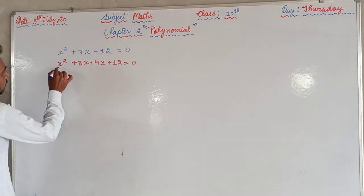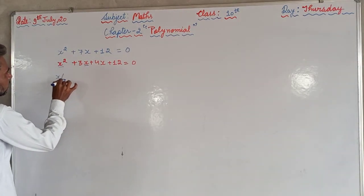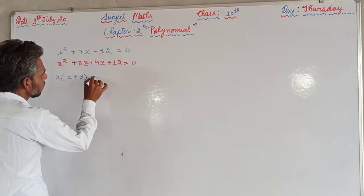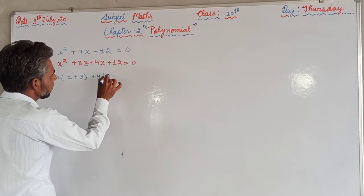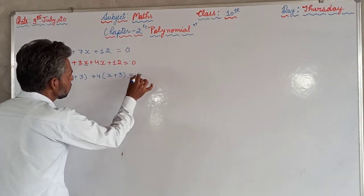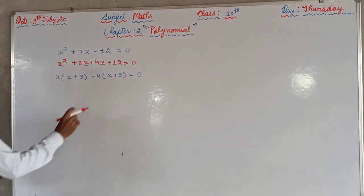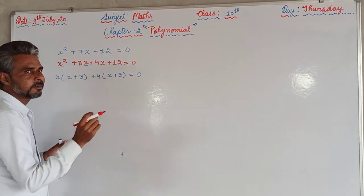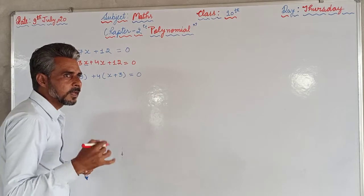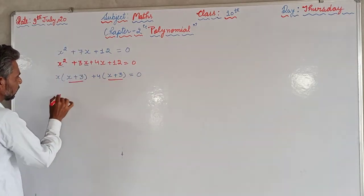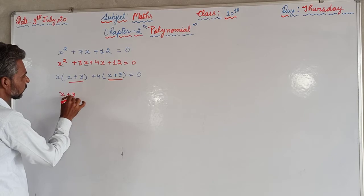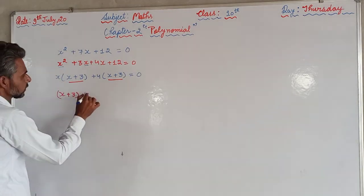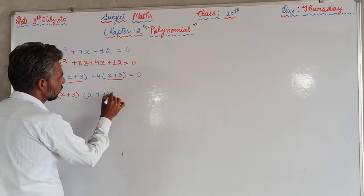So now what we will do, we will take the common. From here x is common, so we have taken x common, remaining is x + 3. From here +4 common, remaining is x + 3 equals to zero. So here we will get the same within the brackets. So now this is common. x + 3 take common, and what is remaining here, x here +4.